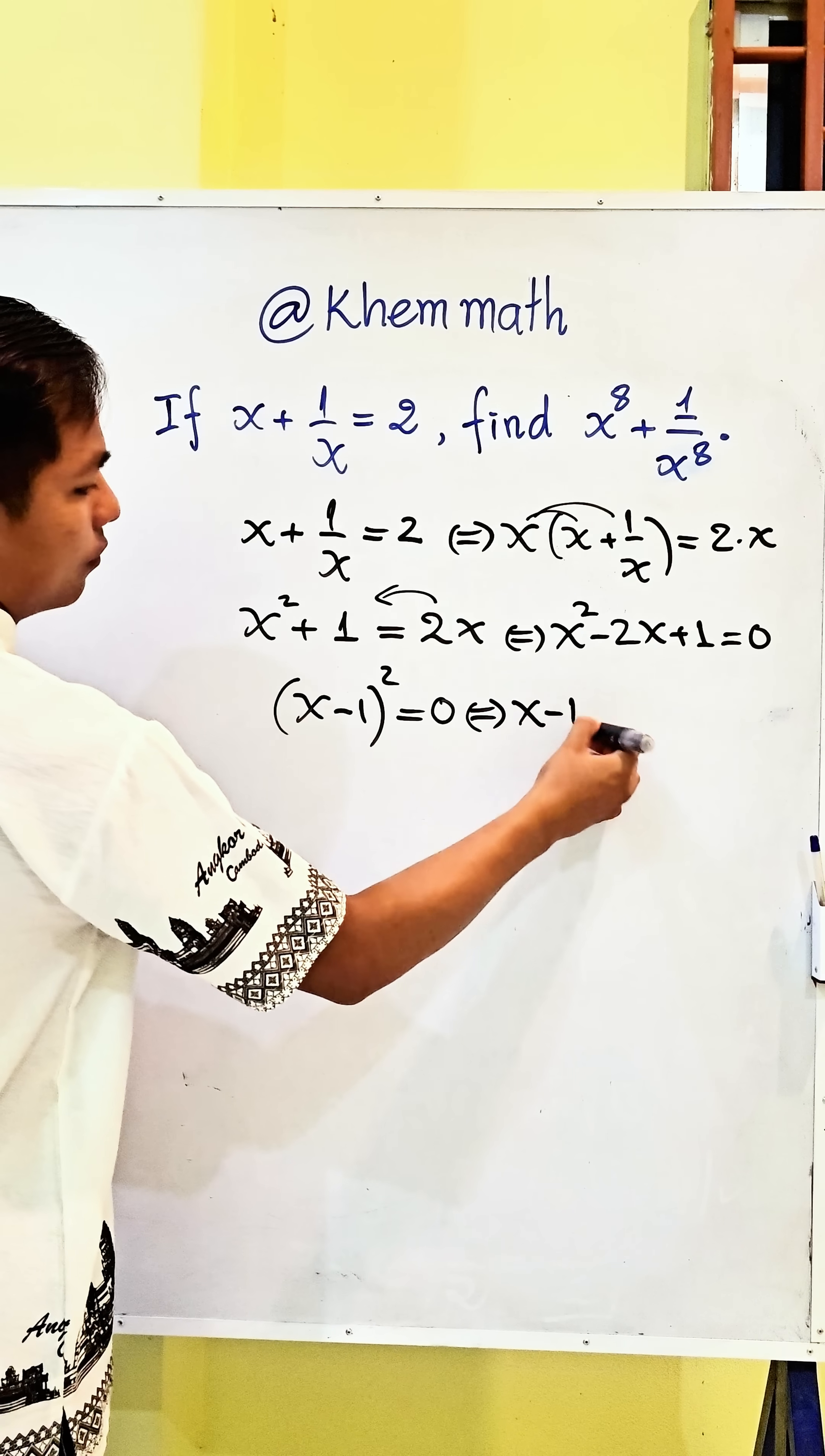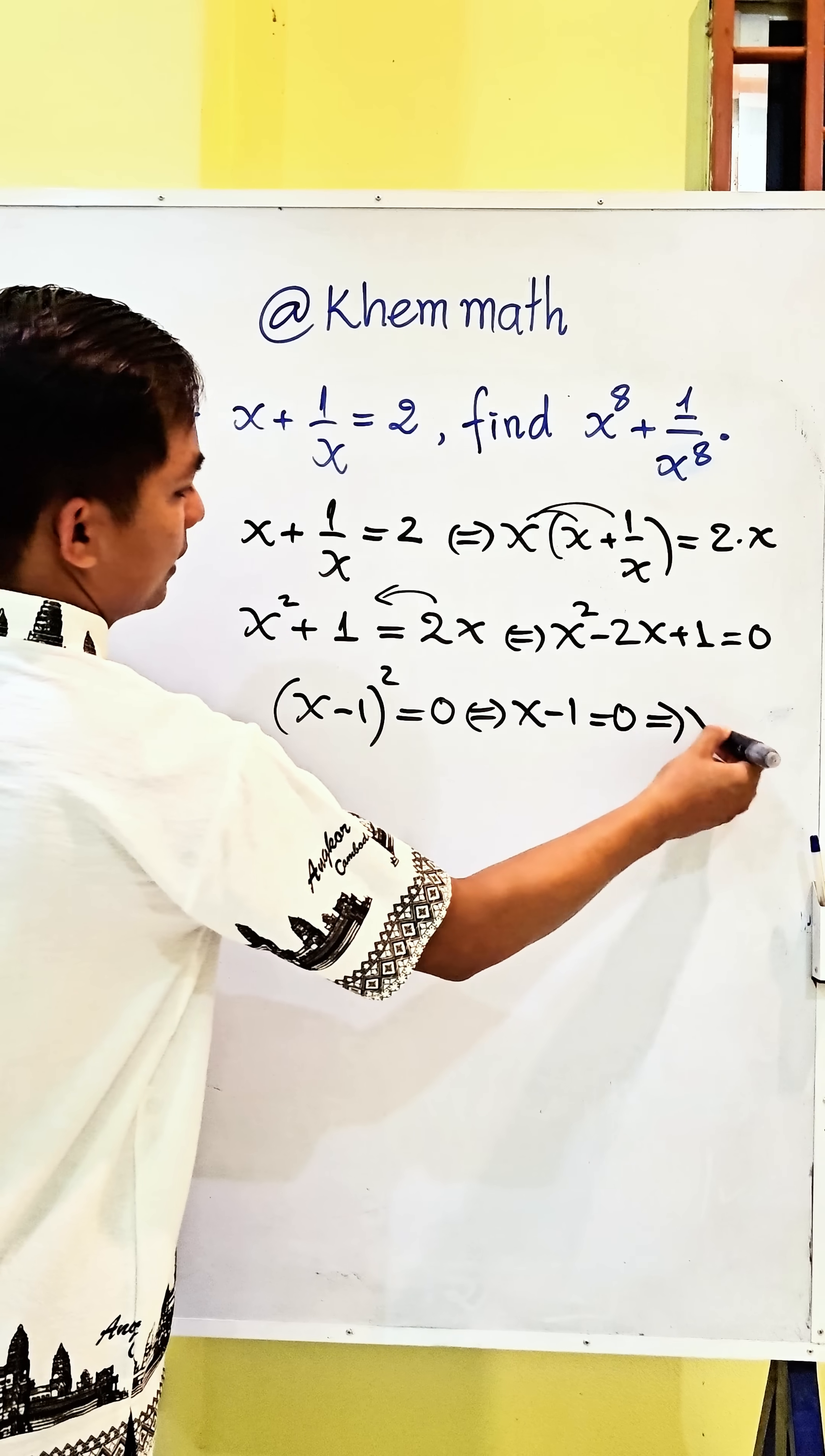And we get x minus 1 equals 0, and we get x equals 1.